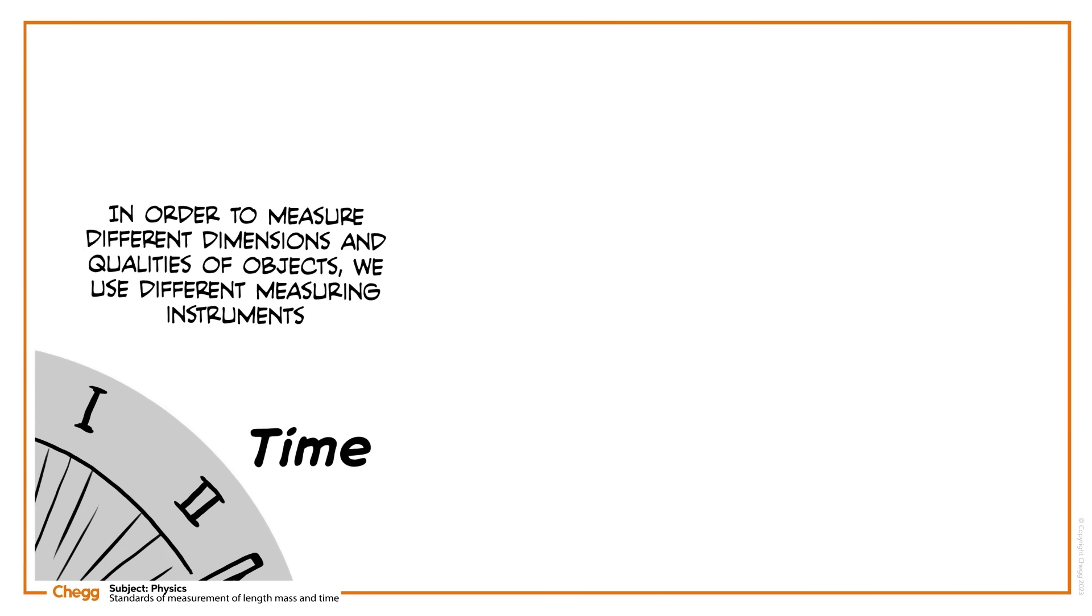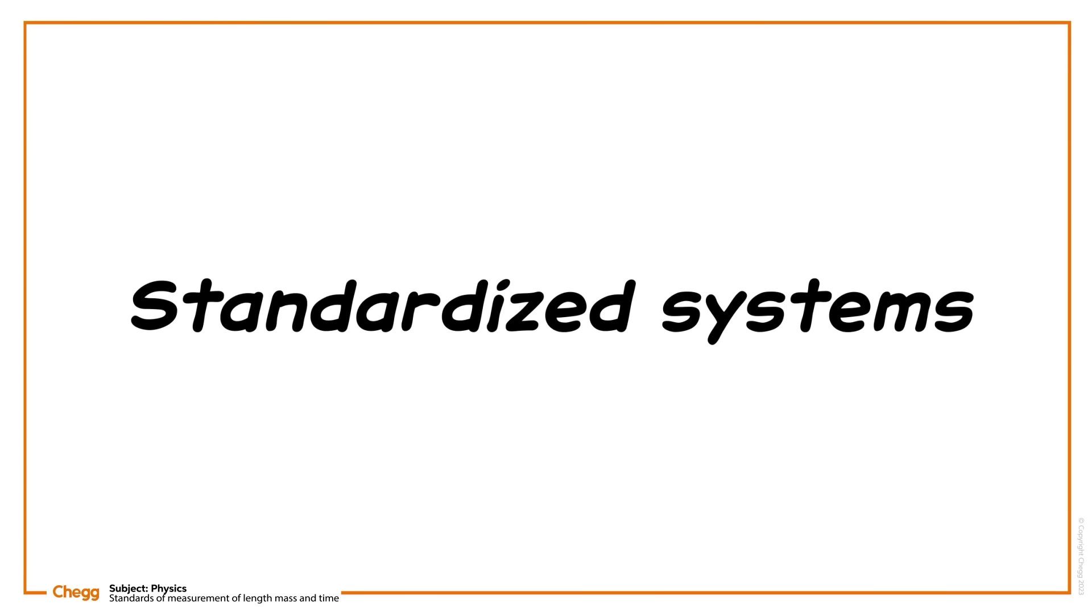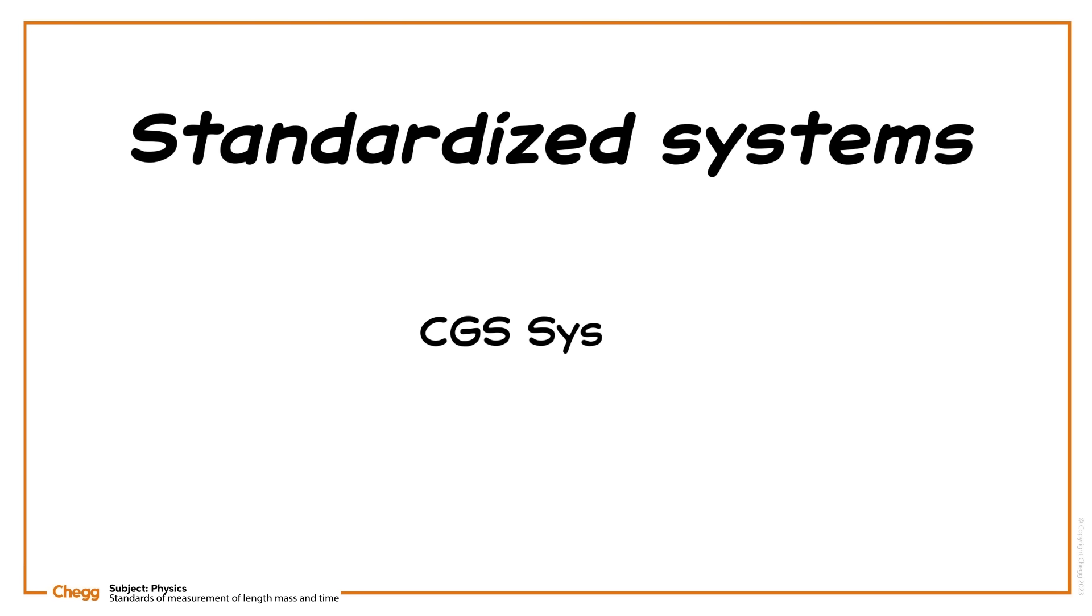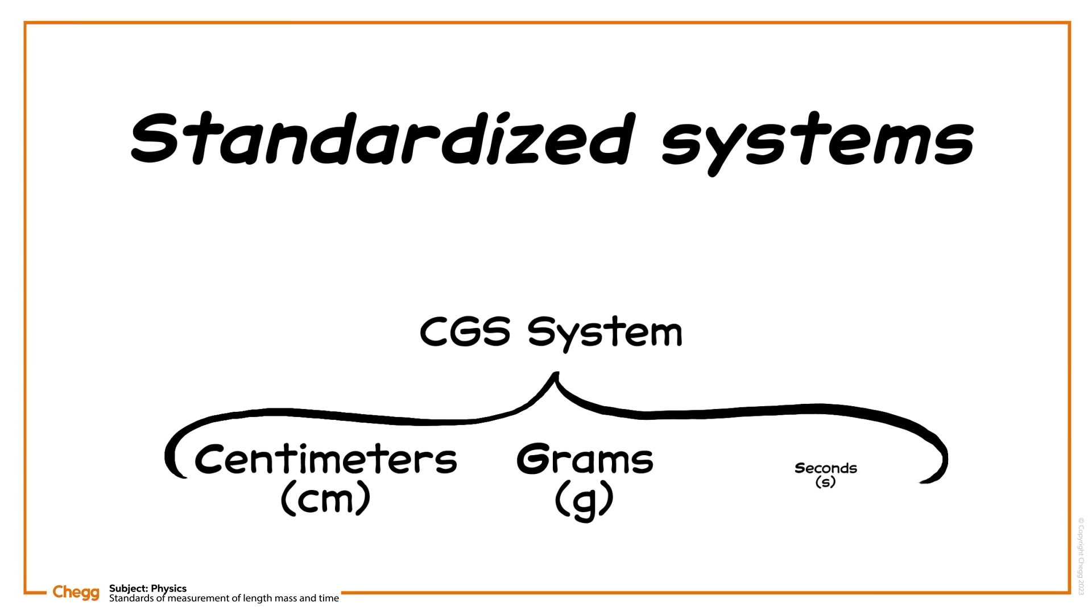So scientists have developed a few standardized systems to make sure that we all measure things in the same way. These systems tend to be referred to via acronyms of their main units. The CGS system, for example, uses centimeters, grams, and seconds.